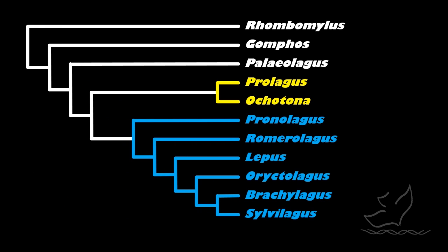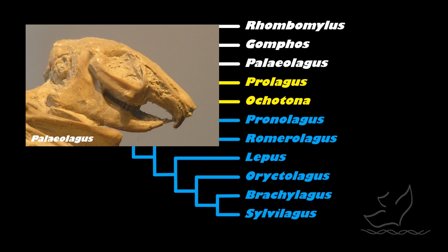So where do these creatures come from? An evolutionist would say there's an evolutionary tree that unites them all, and that bunnies and pikas evolved from a common ancestor that lived millions of years ago. Here's an evolutionary tree showing this — the blue are the bunnies, the yellow are the pikas, and in white we have fossil forms no longer alive. One of those is Palaeolagus, which looks a lot like what a bunny looks like under the skin and muscle. So Palaeolagus is really similar to modern bunnies.